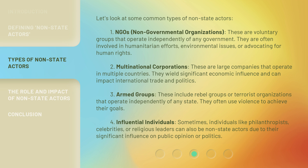Third, Armed Groups. These include rebel groups or terrorist organizations that operate independently of any state. They often use violence to achieve their goals. Fourth, Influential Individuals. Sometimes individuals like philanthropists, celebrities, or religious leaders can also be non-state actors due to their significant influence on public opinion or politics.